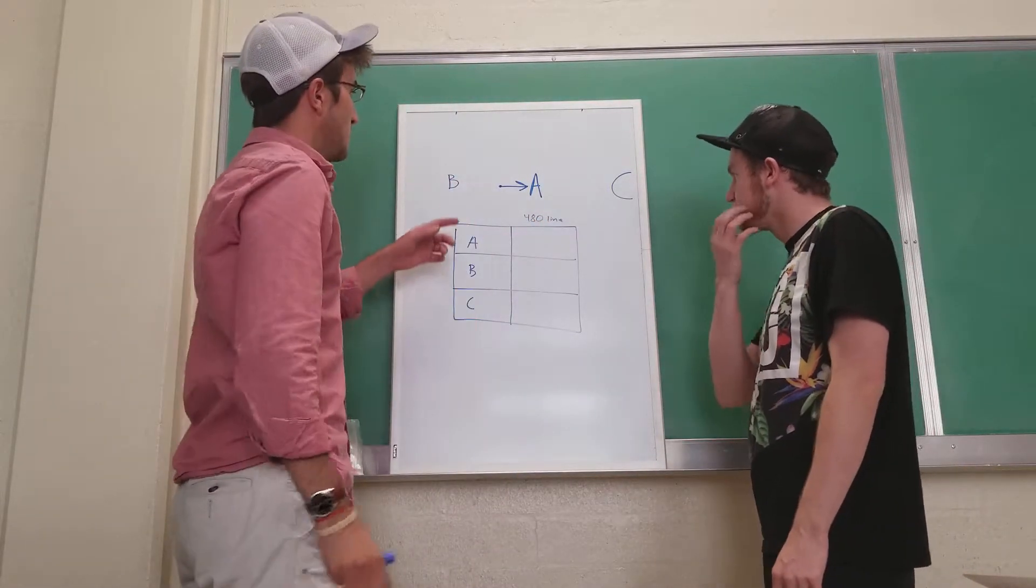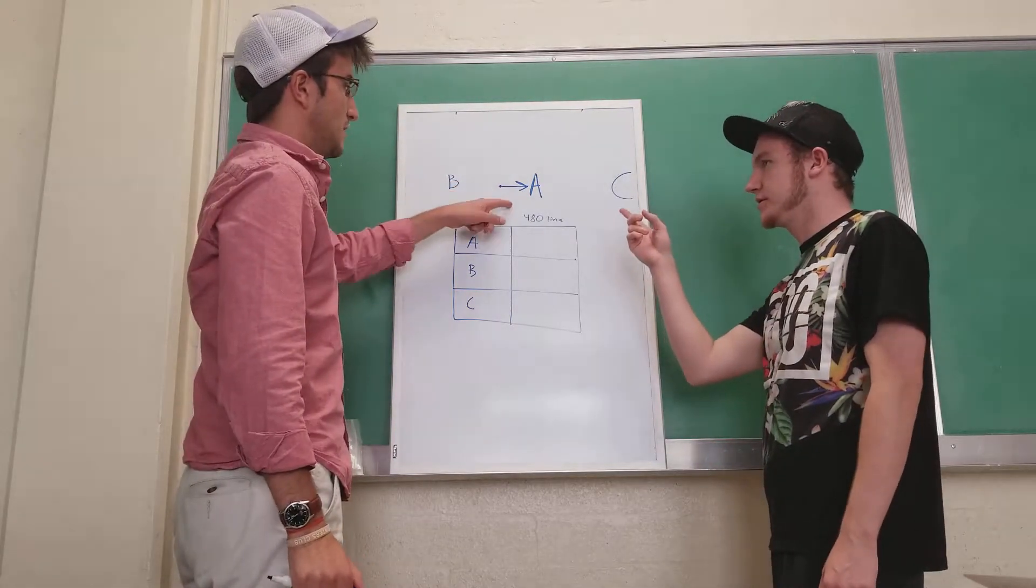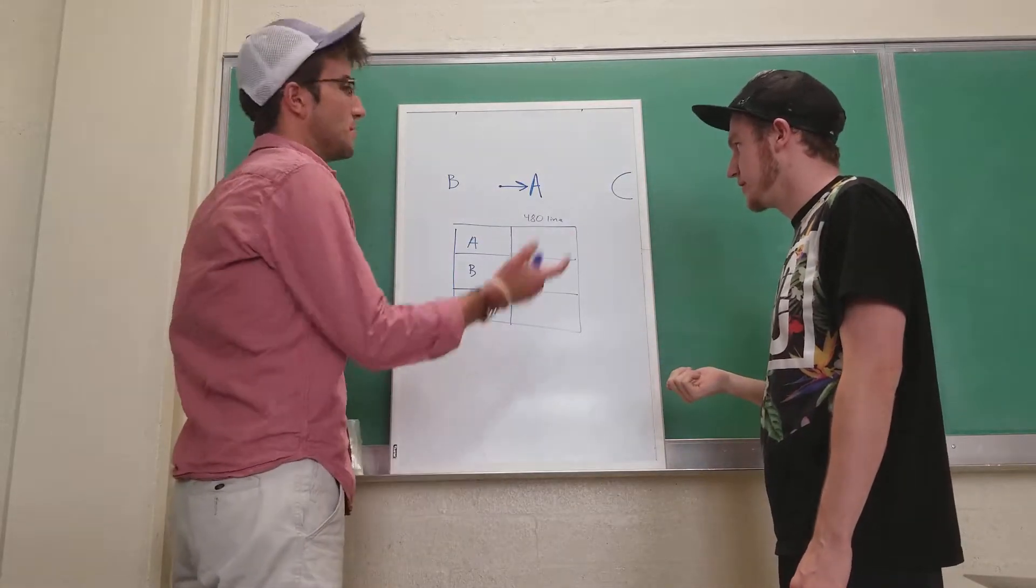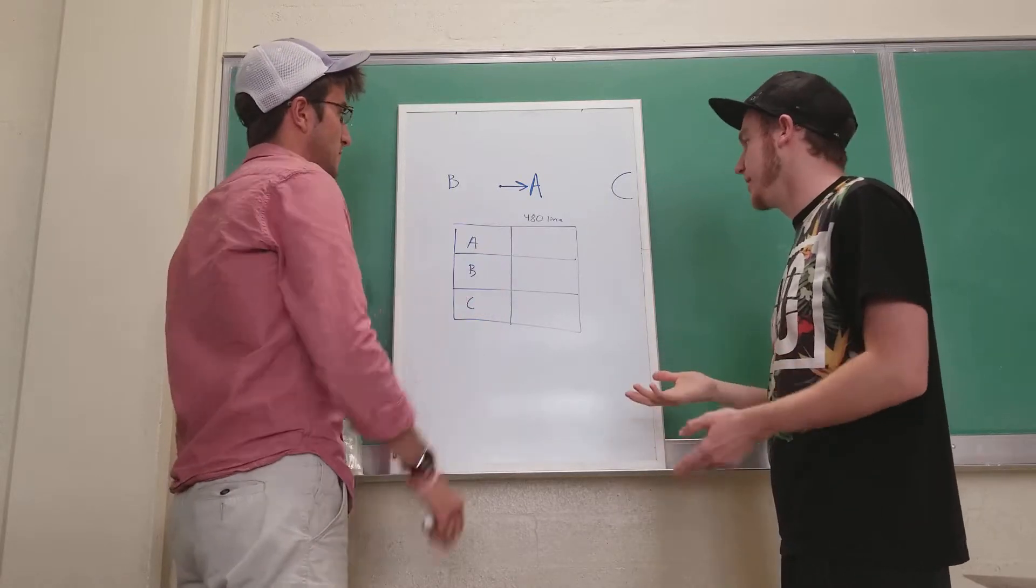All right. So I'll just start with A. So we're moving towards it, but it's a close distance. So if we're moving towards it, that's blue shifted. Yes, it's blue shifted. But like you said, since it's close, it'll be shifted less. So just a small shift.